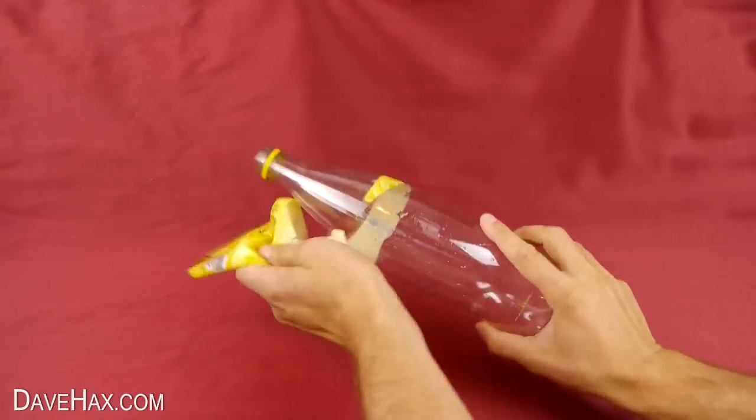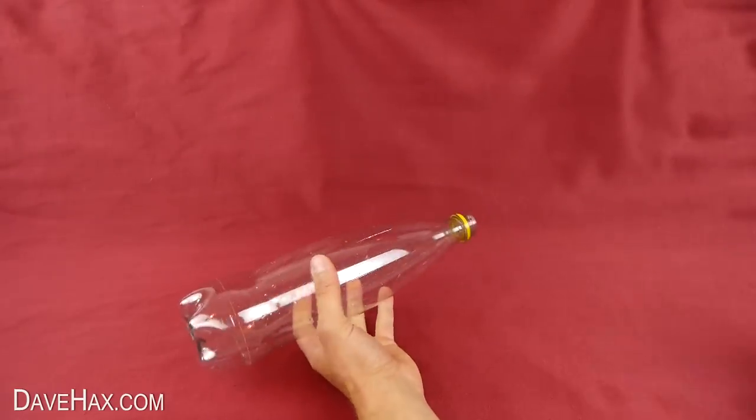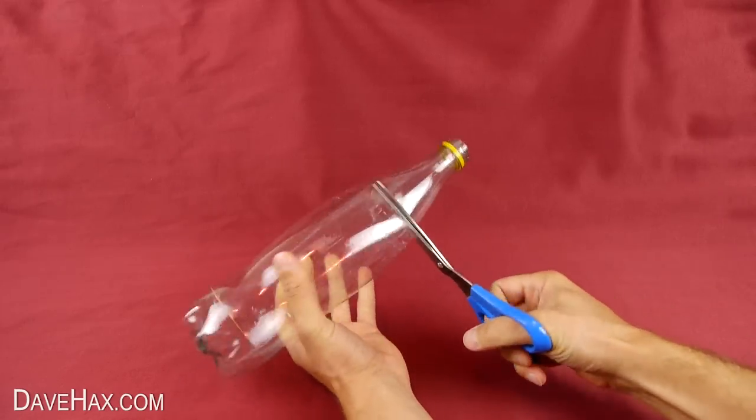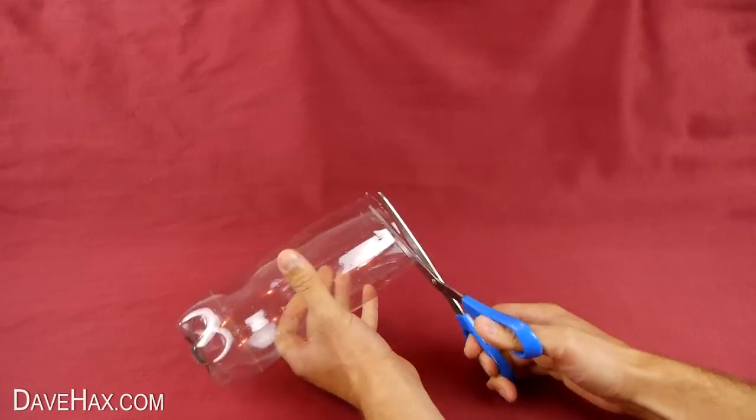Start by removing the label, then carefully cut into the bottle and use some scissors to chop off the top. Try to make the cut as straight as possible.